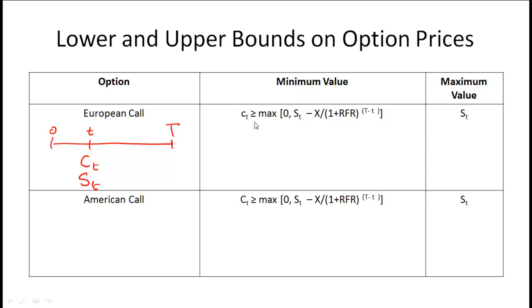The value of the European call option at time t is at least 0 — a call option is giving the holder an option so it must be worth something, it cannot be worth less than 0. Then we have s_t minus X, so the value of a call option is at least the stock price minus the exercise price. This is the first-level relationship and should remind you of intrinsic value.